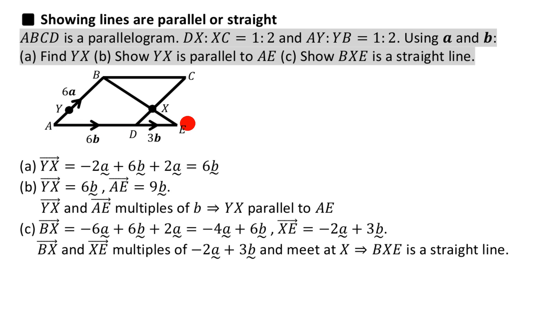So we know YX is 6b, AE is 9b. Both these lines are made up of b's, our vector b, and so they're pointing in the same direction.